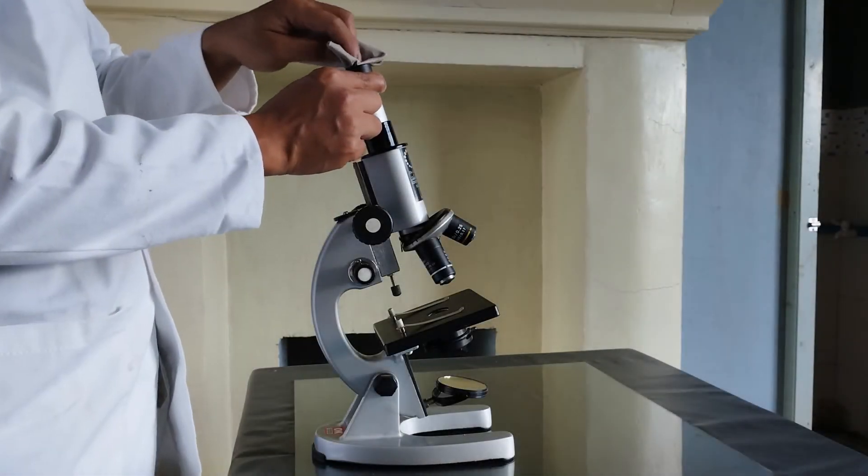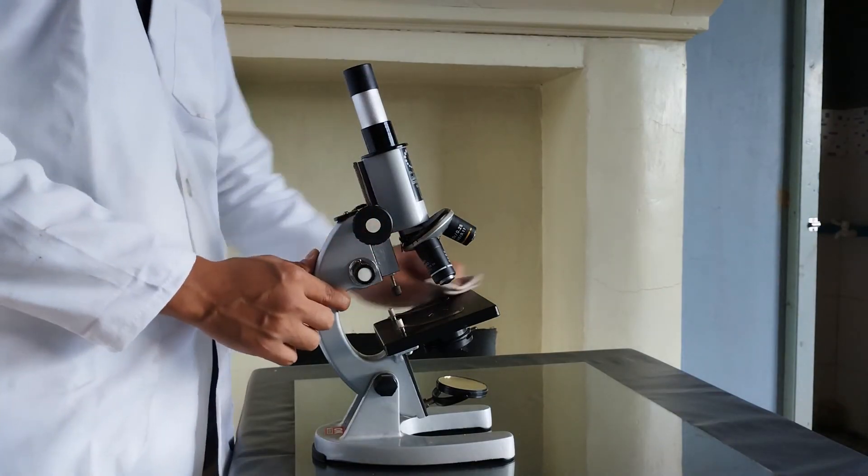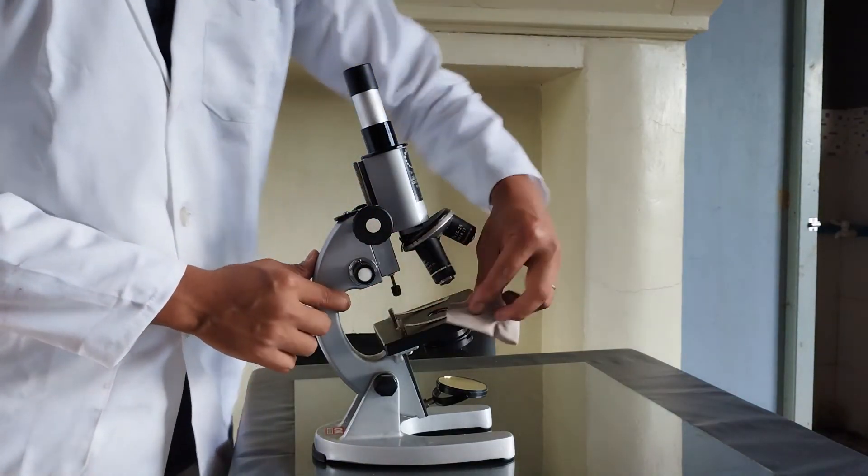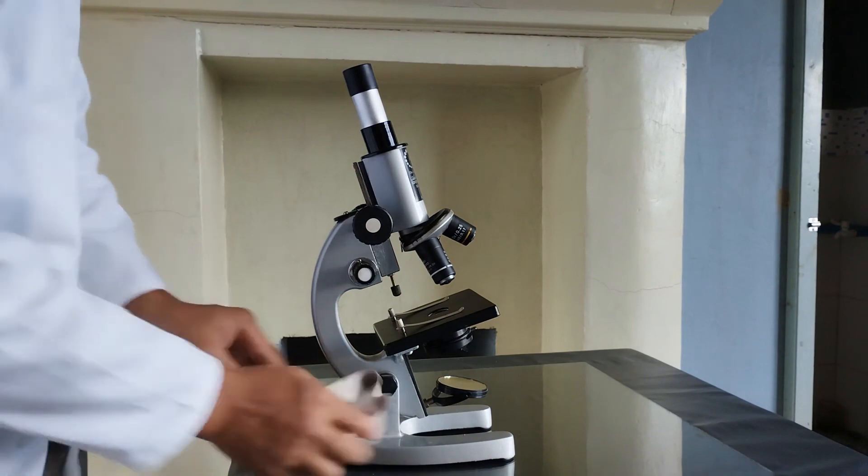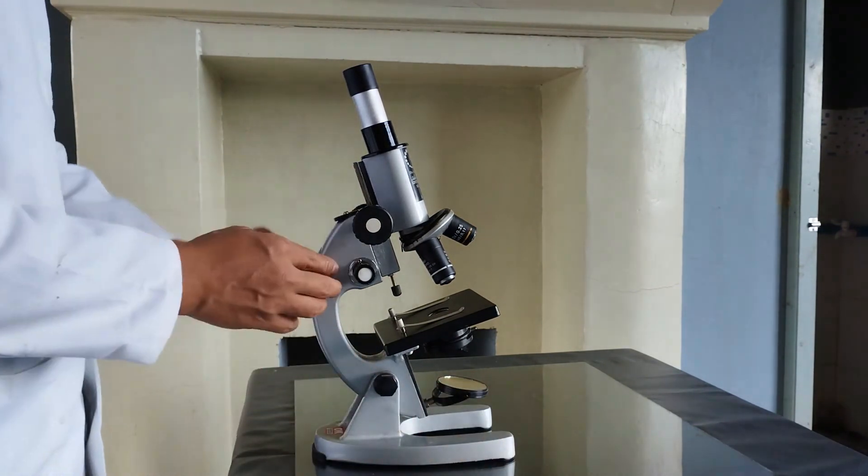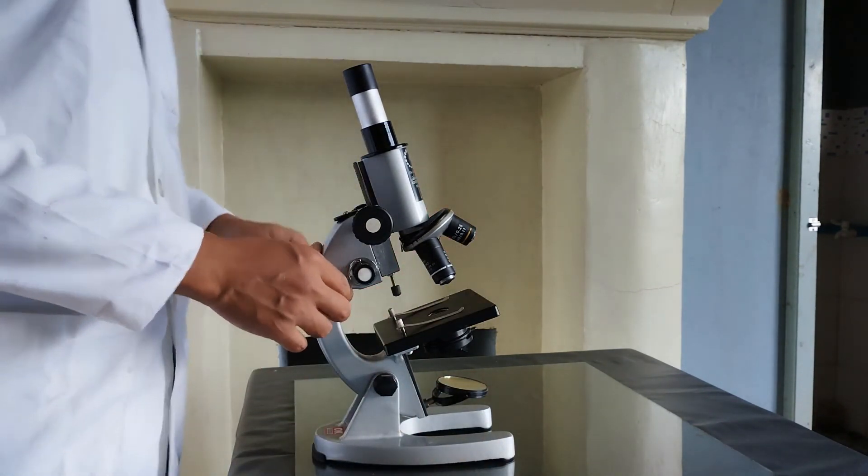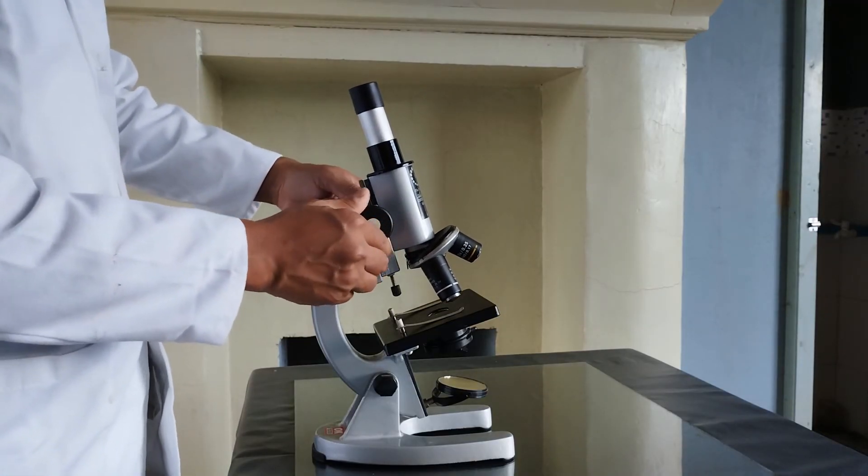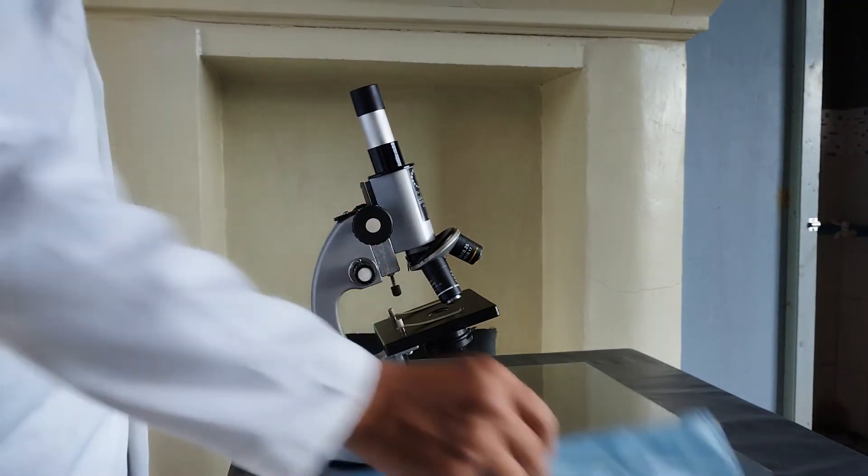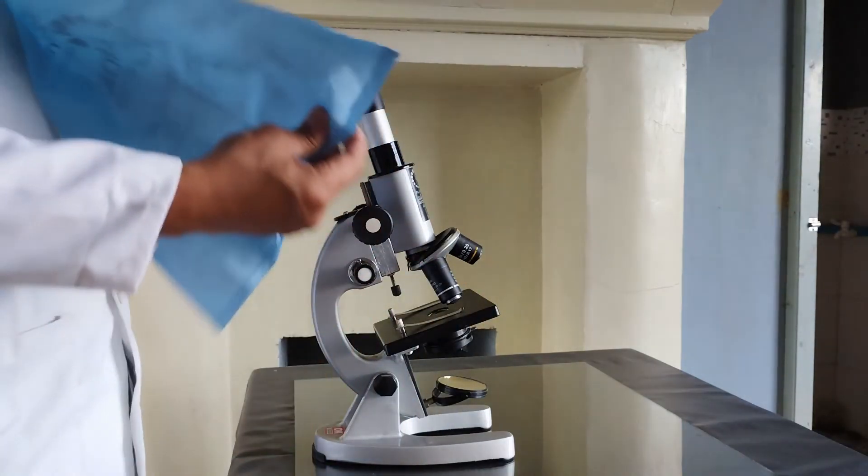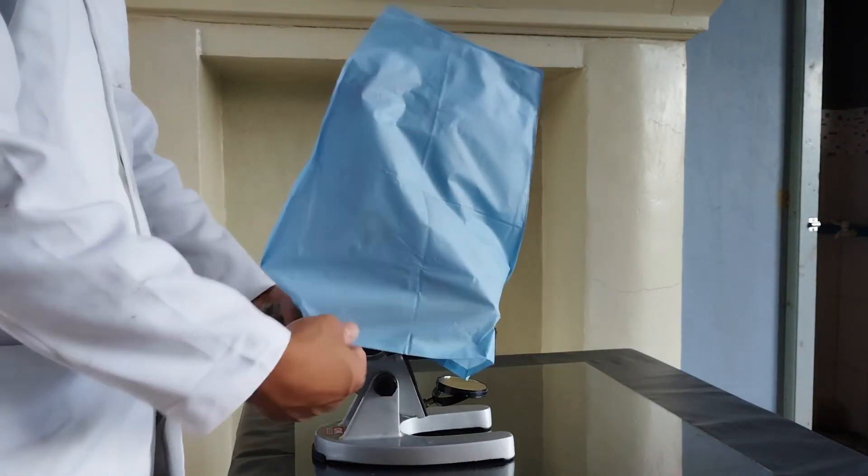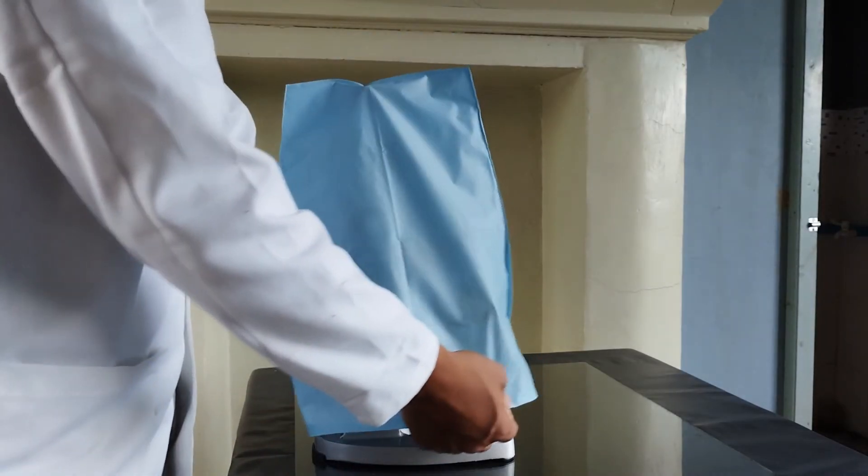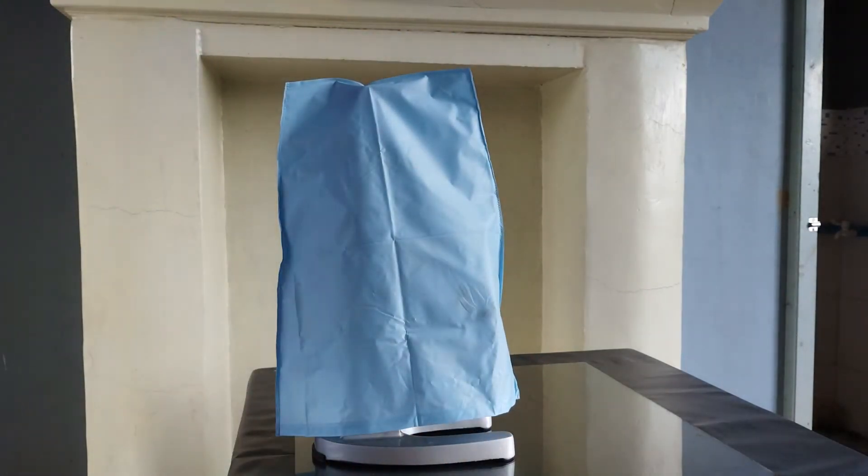Once you're finished using the microscope, clean the lenses, the stage and the body with lens cloth. Lower the body tube to minimum and keep the nose piece in neutral position, that is, without clicking any objective in position in alignment with the body tube. Finally, either cover it with a microscope cover or put it back into its designated box.